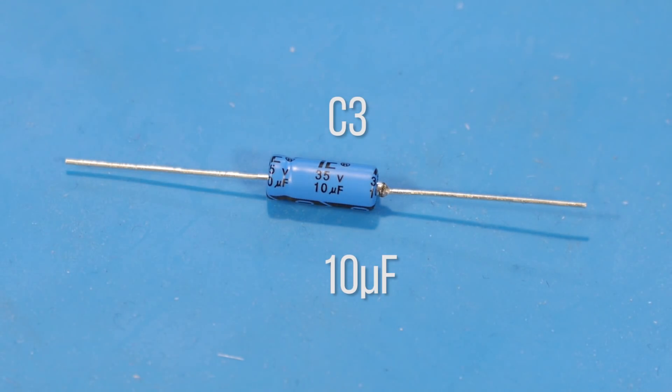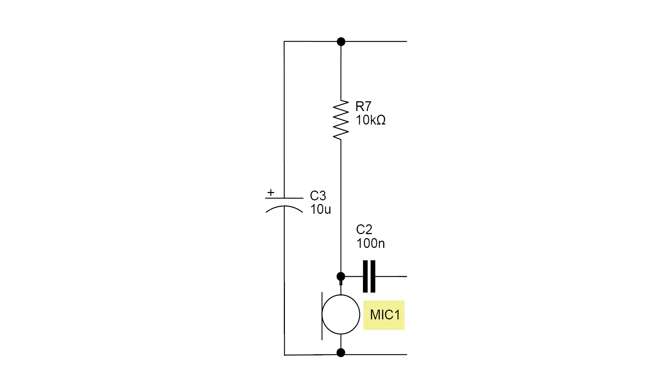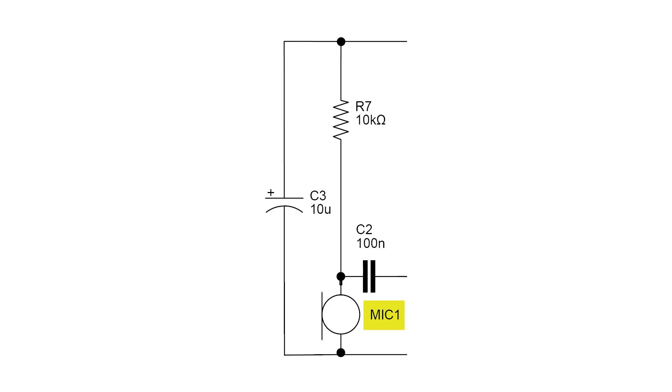Next we'll place the last capacitor C3 and the microphone. The microphone connects to C2 and R7 and then the ground on the other side and C3 connects to the power plane and the ground plane.